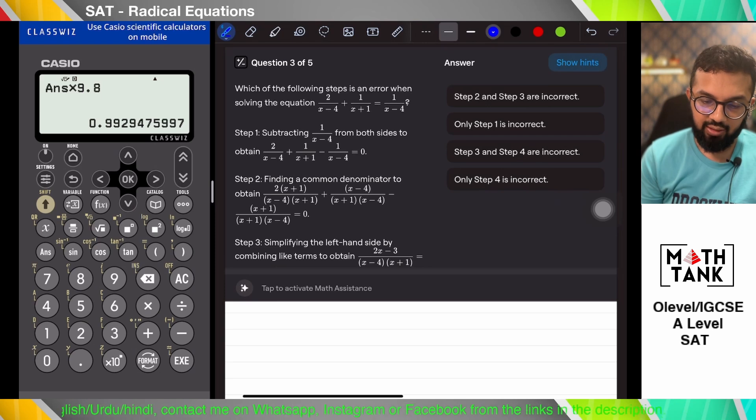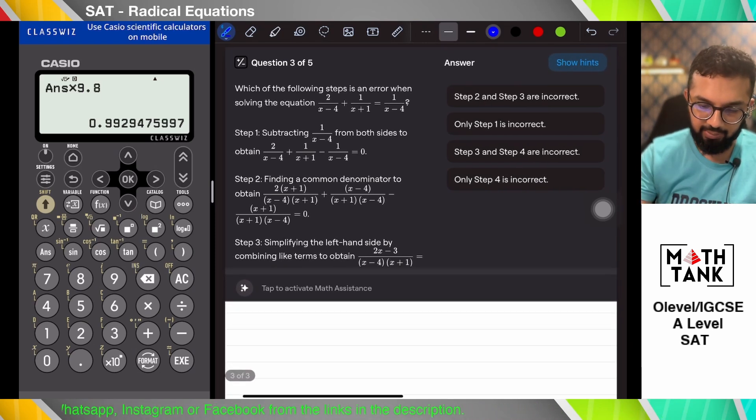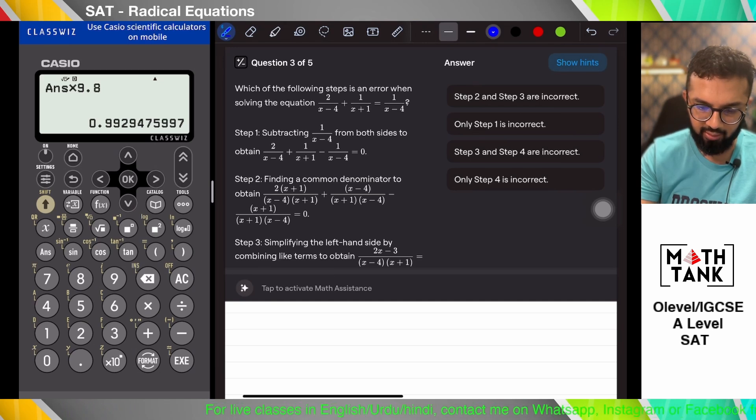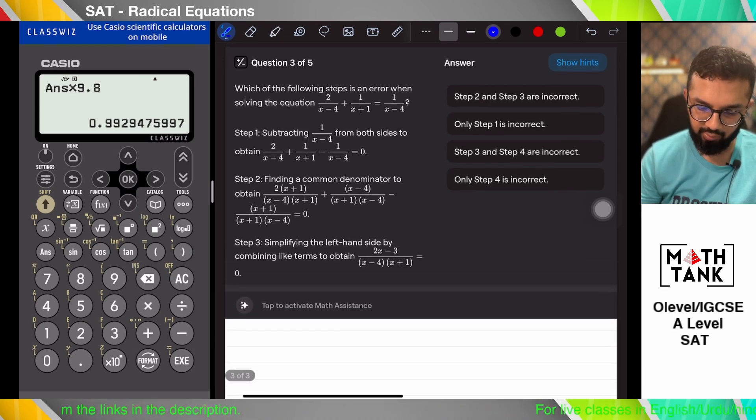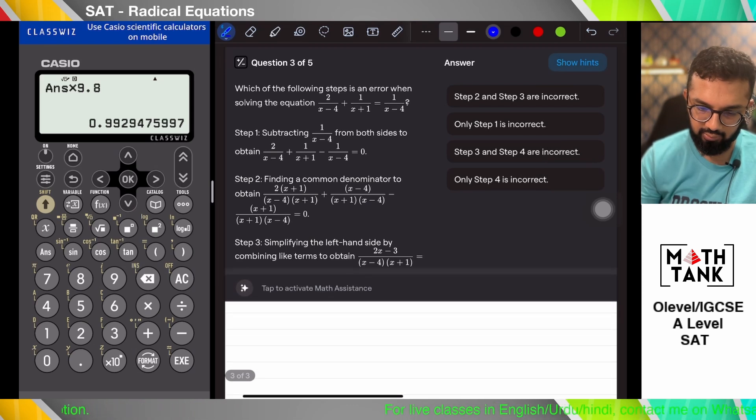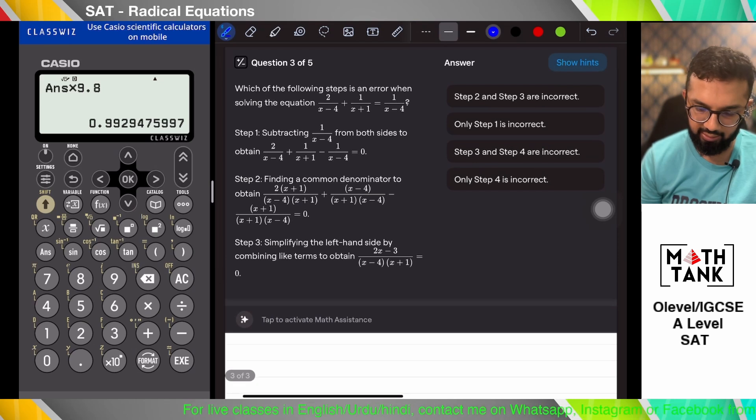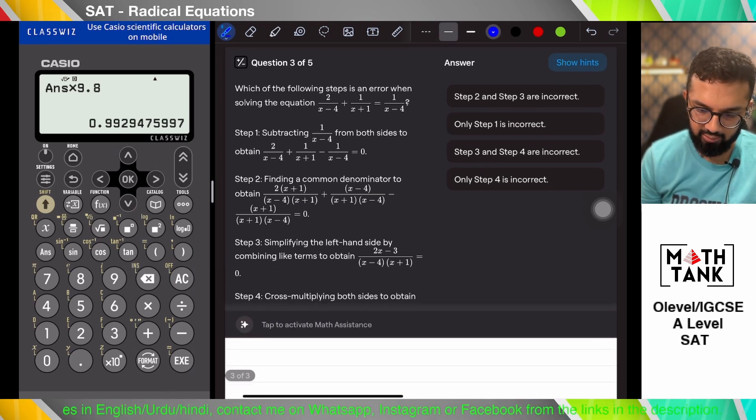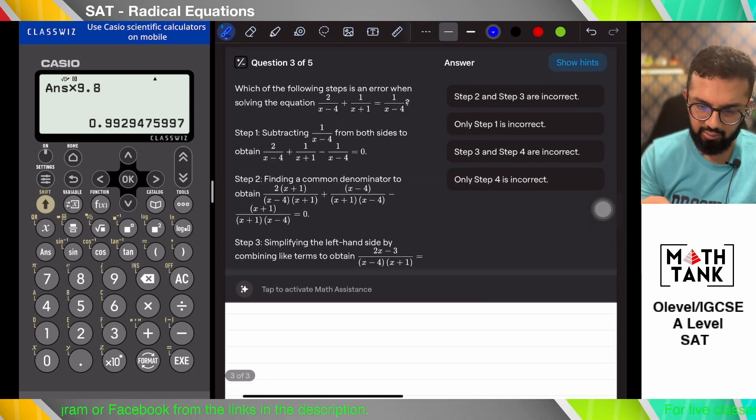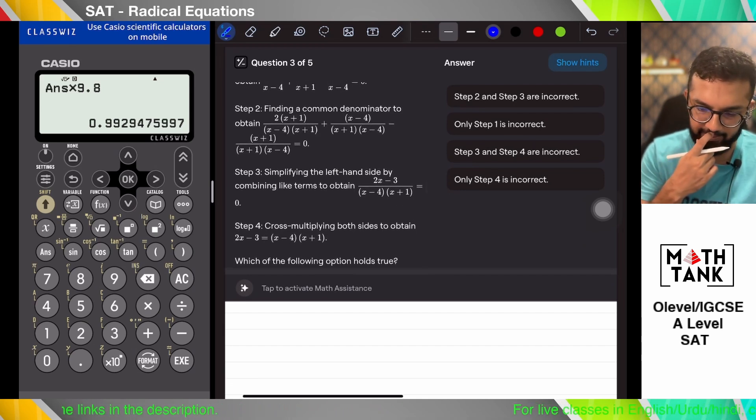Okay, which of the following steps is an error when solving the equation? This subtracting 1 over x minus 4 from both sides to obtain this. Finding common denominator. Now let's see what the common denominator is. Yes, it should be x minus 4 and x plus 1. Okay, 2 should get multiplied with.